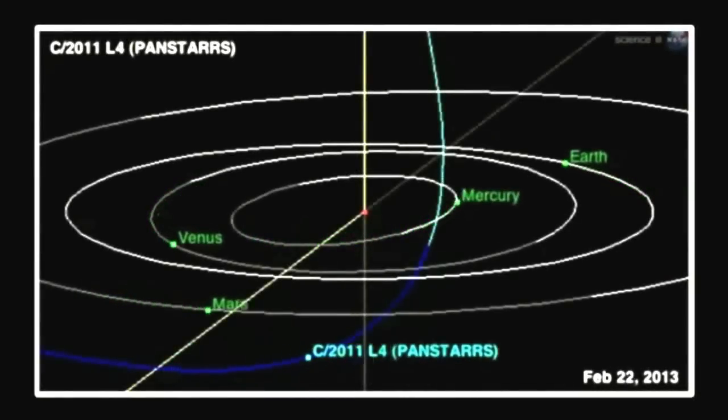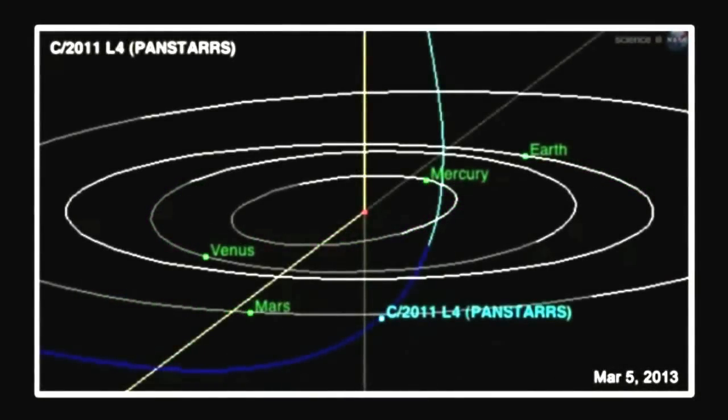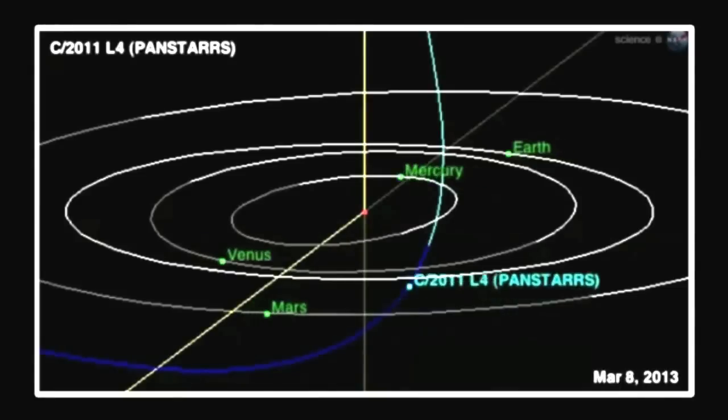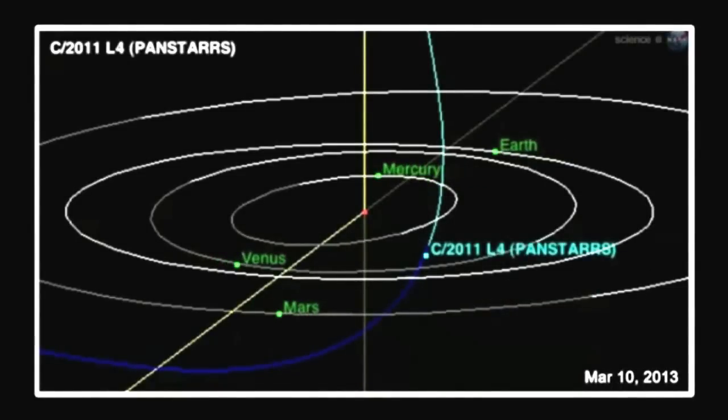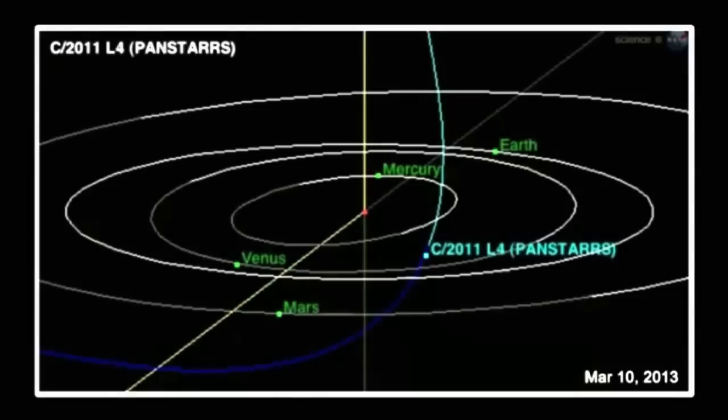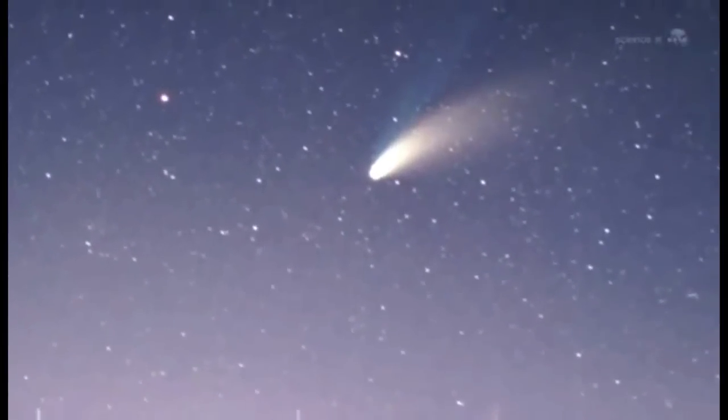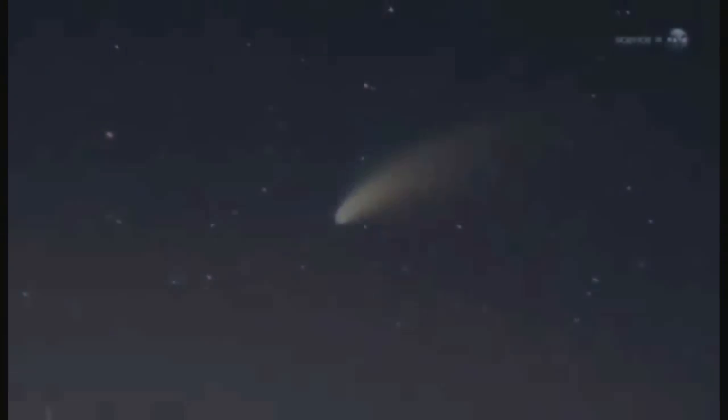Two other key dates are March 5th, when the comet comes closest to Earth, about 100 million miles away, and March 10th, when the comet comes closest to the Sun. The dose of solar heating it receives just inside the orbit of Mercury could be just what the comet needs to push it into the realm of naked-eye visibility.